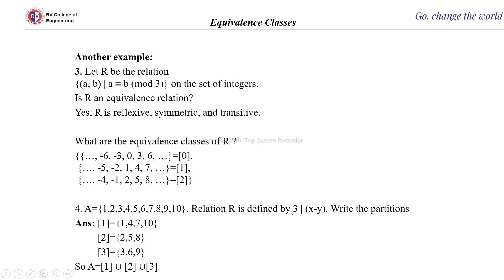Therefore, the partition of set A is: equivalence class of 1 ∪ equivalence class of 2 ∪ equivalence class of 3. We do not write equivalence class of 0 here because 0 is not an element of A. With '3 divides x − y' you get 3 equivalence classes (0, 1, 2 as remainders), but since we start from 1, we use classes of 1, 2, and 3 instead.